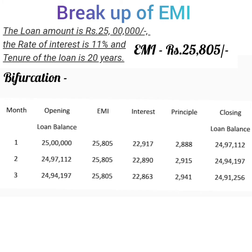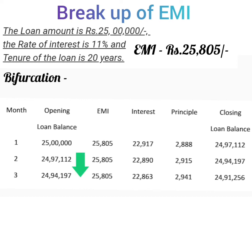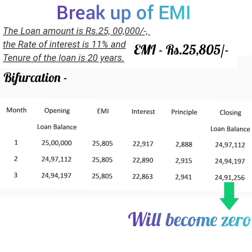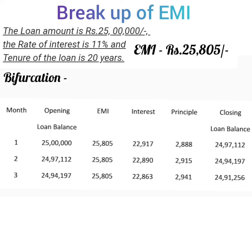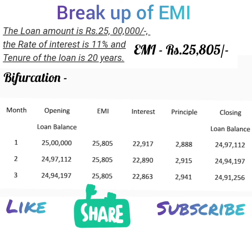If you continue bifurcating EMI for 20 years in this manner, you will find that each month the interest portion of EMI keeps on decreasing and the principal portion keeps on increasing. This is because the loan amount outstanding is highest in the first month and then keeps reducing. Since the outstanding loan amount keeps reducing after payment of each EMI, the interest portion also keeps decreasing. The EMI however will remain the same for the entire tenure, and the principal balance at the end of the 20th year will become zero. This is how EMI is bifurcated between interest and principal — now you don't need anyone to explain why in the initial period the major portion of EMI goes towards interest.